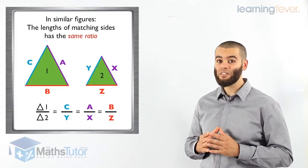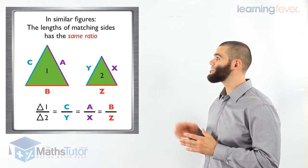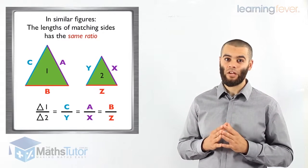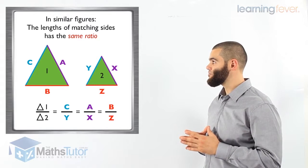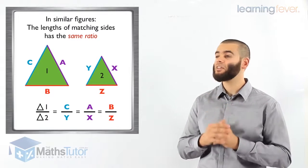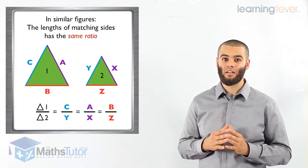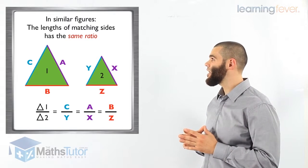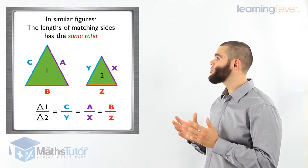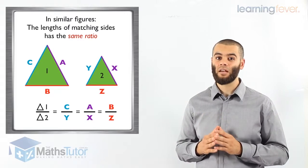In similar figures, the length of matching sides — the length of corresponding sides — has the same ratio. Very important concept to know. So what we mean by that: if we have C divided by Y, side C divided by side Y, it will have the same result as side A over side X and B over side Z. This will only work with similar figures.